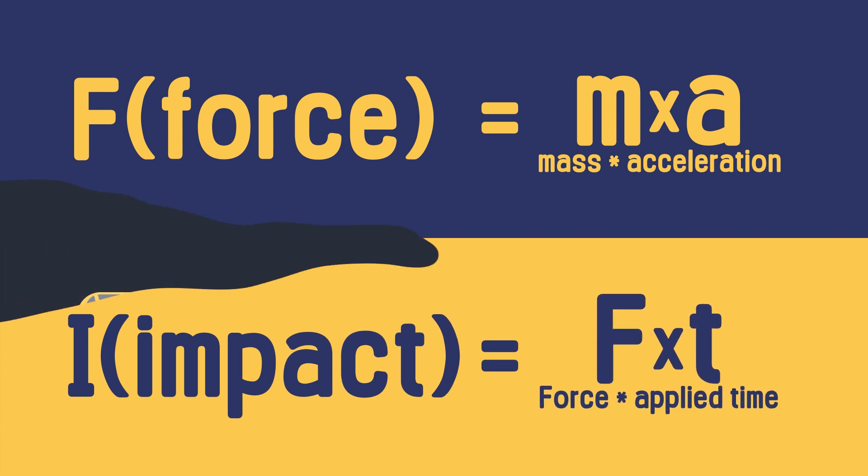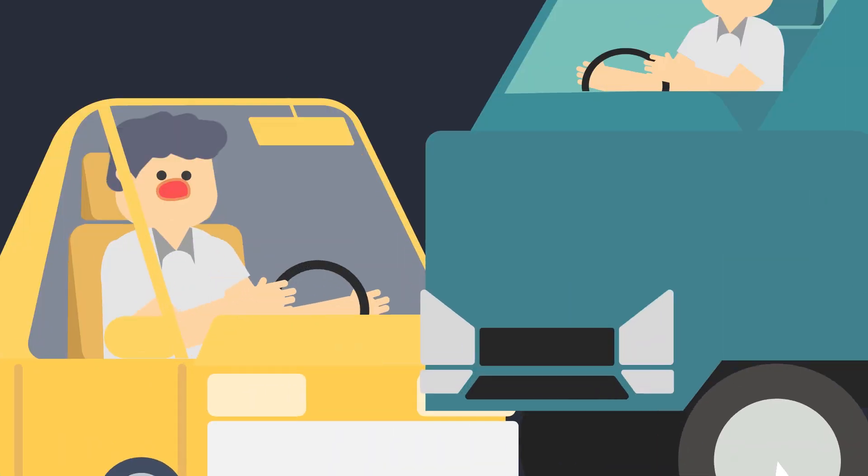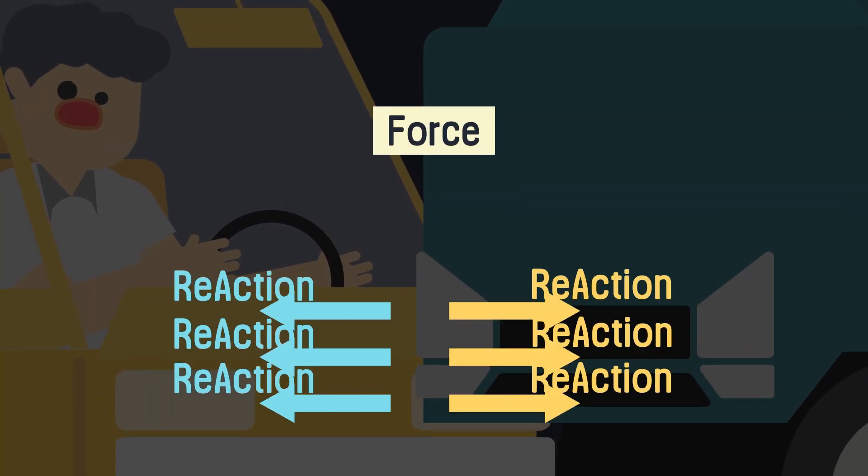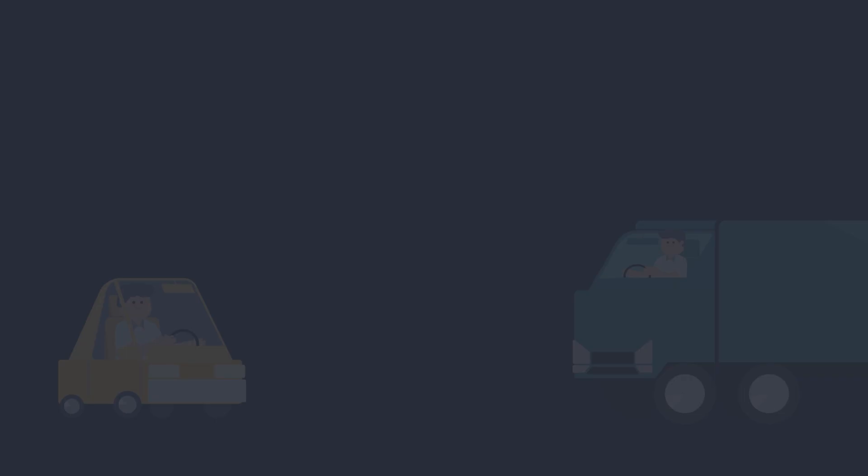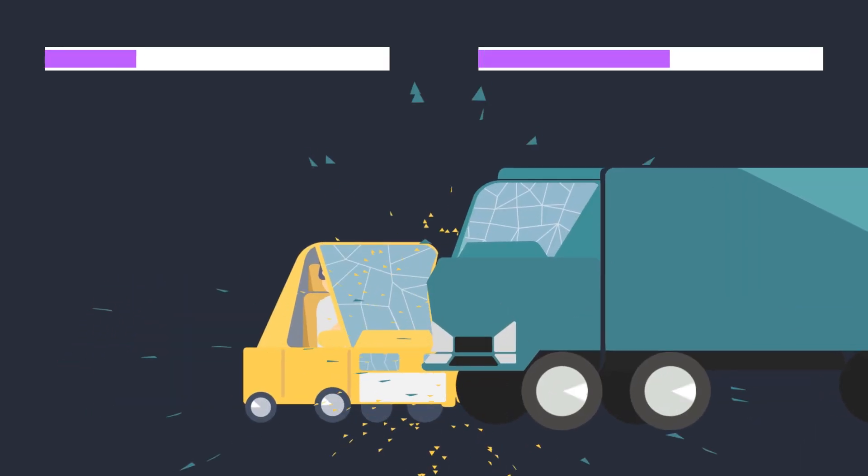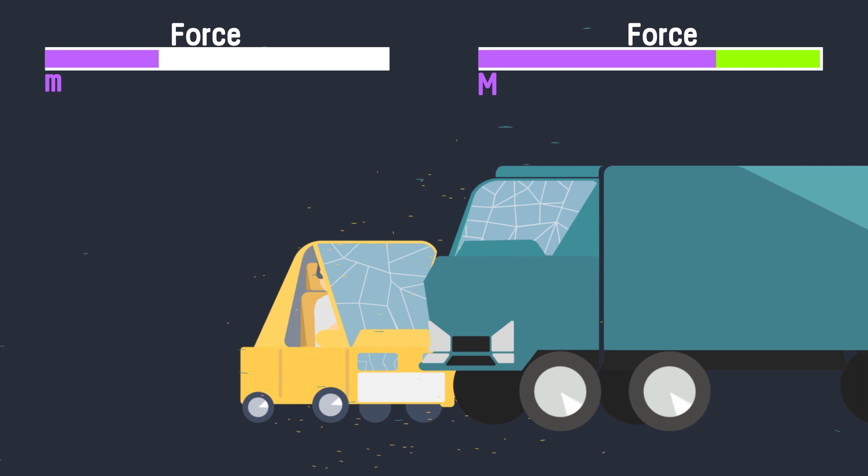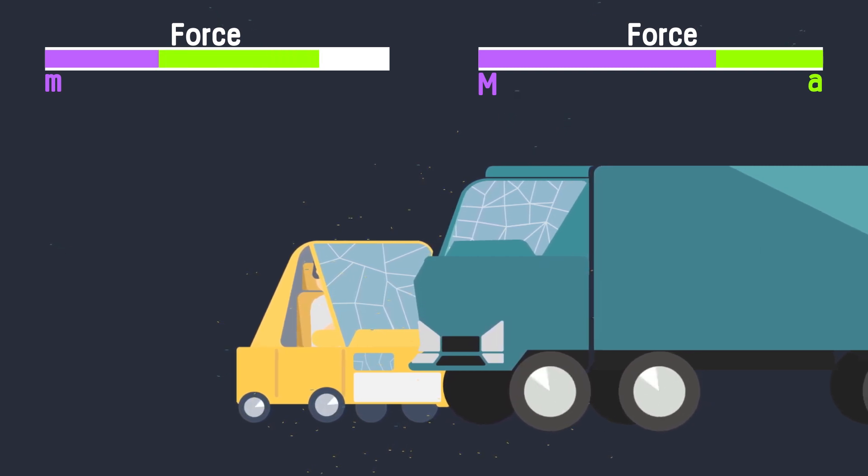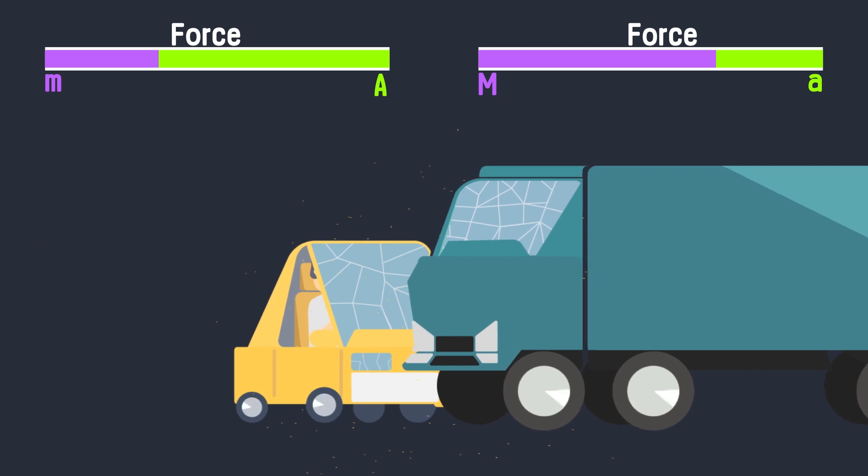When the big truck and the small vehicle crash, both cars experience the same magnitude of force, according to Newton's third law. The force and the impulse are proportional to mass and acceleration, which is change in speed. Even when the two cars receive the same impact, the big truck receives less acceleration because it has greater mass, and the small vehicle receives greater acceleration because it has lower mass.